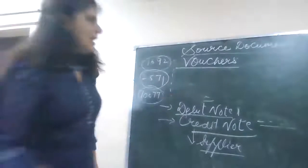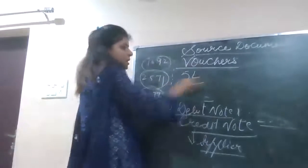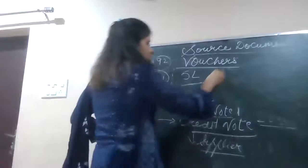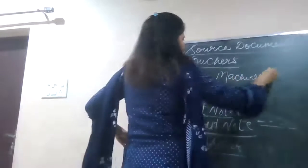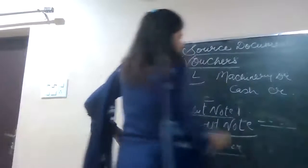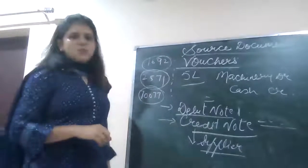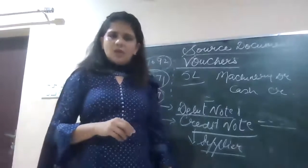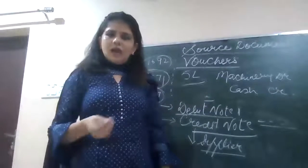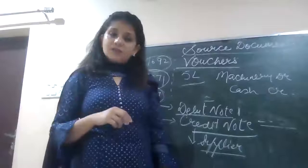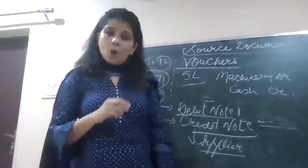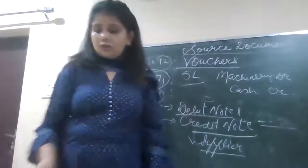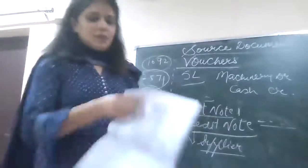When we were doing the features of source documents earlier, we read that in order to prepare vouchers, source documents will help us. For example, I purchased machinery on cash for Rs 5 lakh. Now I will make a voucher. In that voucher I will write machinery has come so debit machinery and credit cash. Vouchers will always tell us which account is to be debited and which account is to be credited.